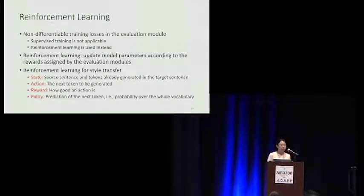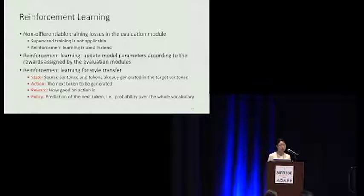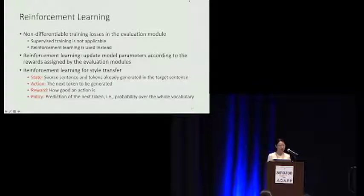The evaluators put explicit constraints on the generated sentences in terms of semantic content, style, and fluency. However, these evaluators introduce non-differentiable training losses, so we cannot use supervised learning anymore and instead turn to the reinforcement learning framework. The four basic elements of the RL framework are state, action, reward, and policy.